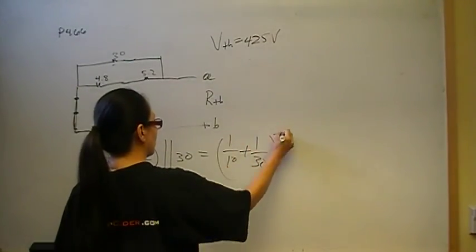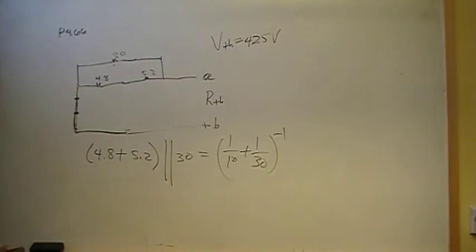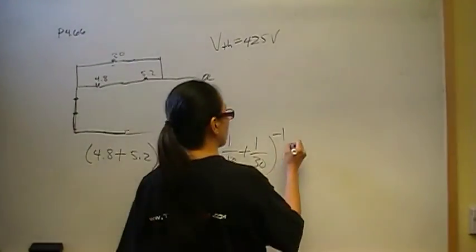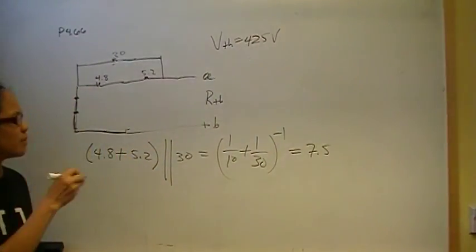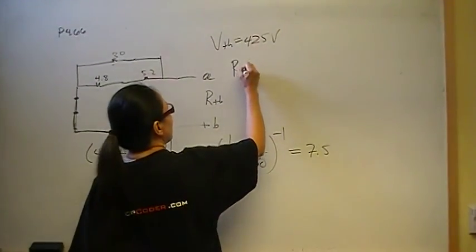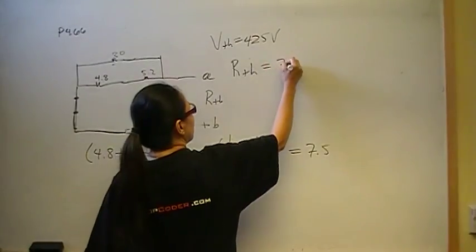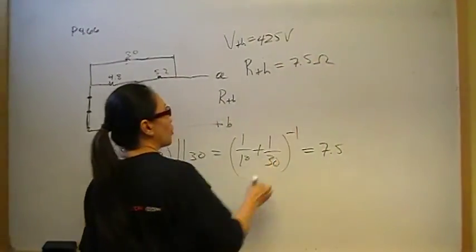So that's going to give me 1 over 10 plus 1 over 30, the inverse of that. So 1 divided by 10 plus 1 divided by 30. And that's going to give me 7.5. And that is going to be my R-Thevenin. So R-Thevenin then is 7.5 ohms.